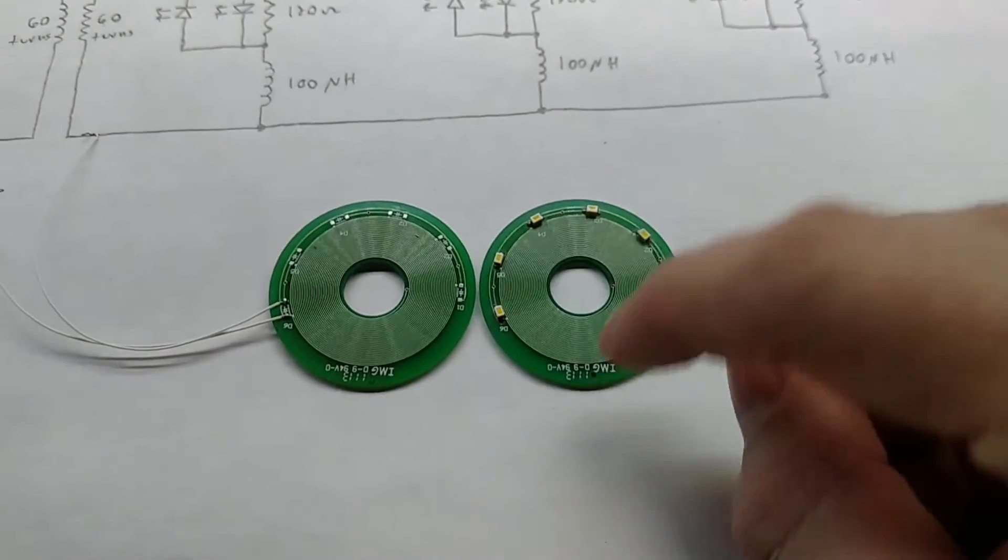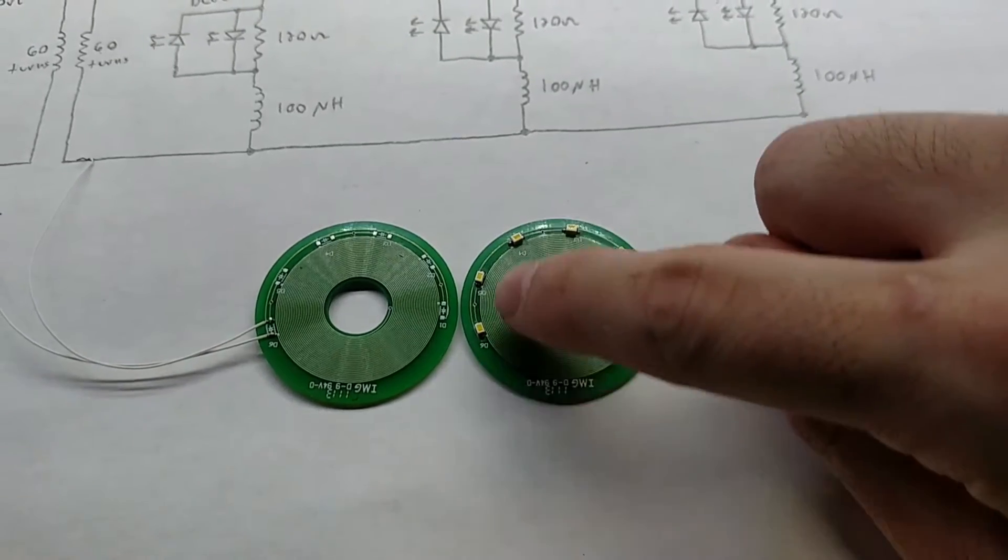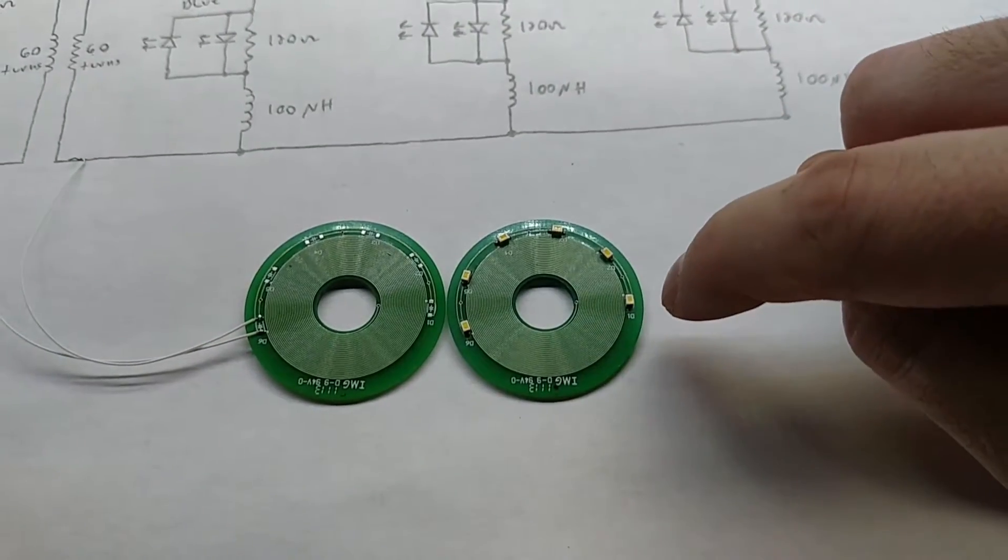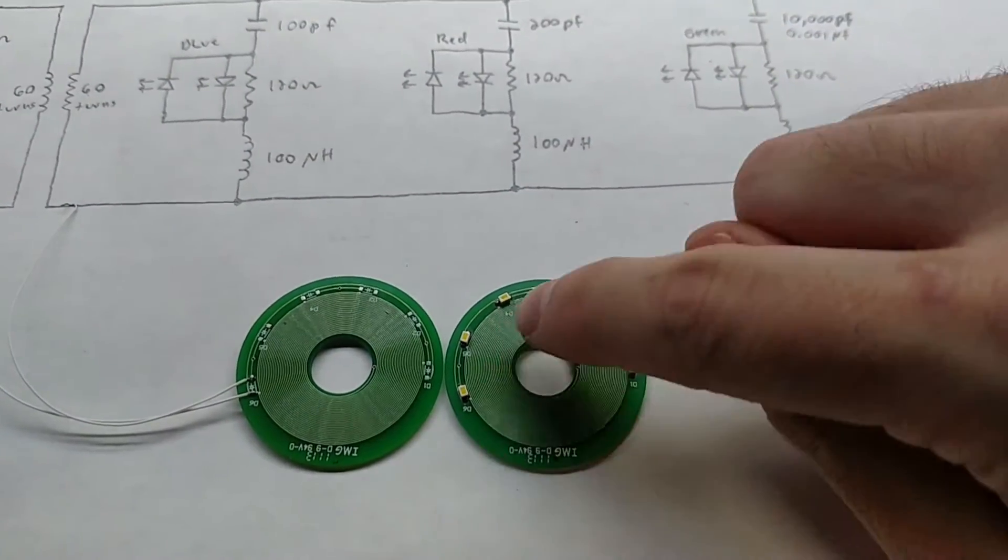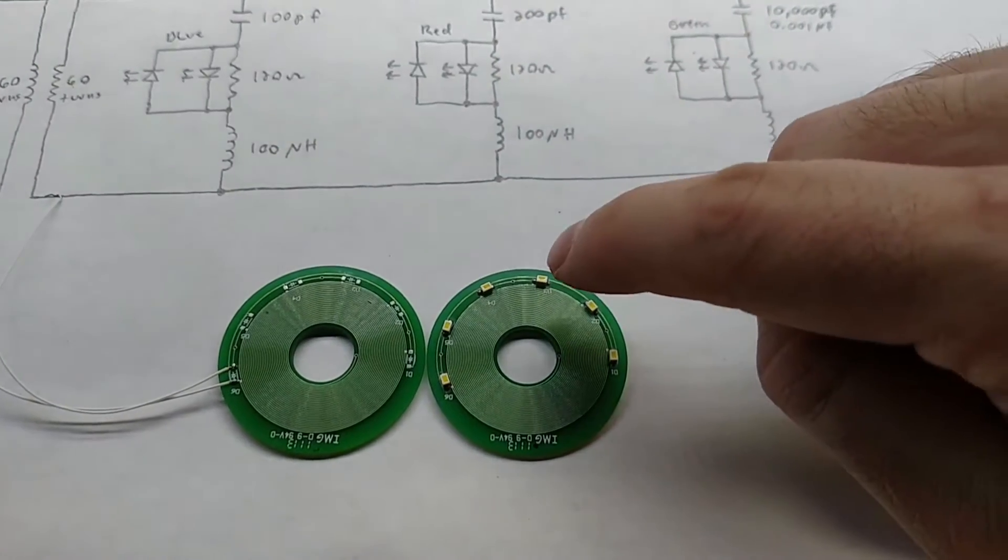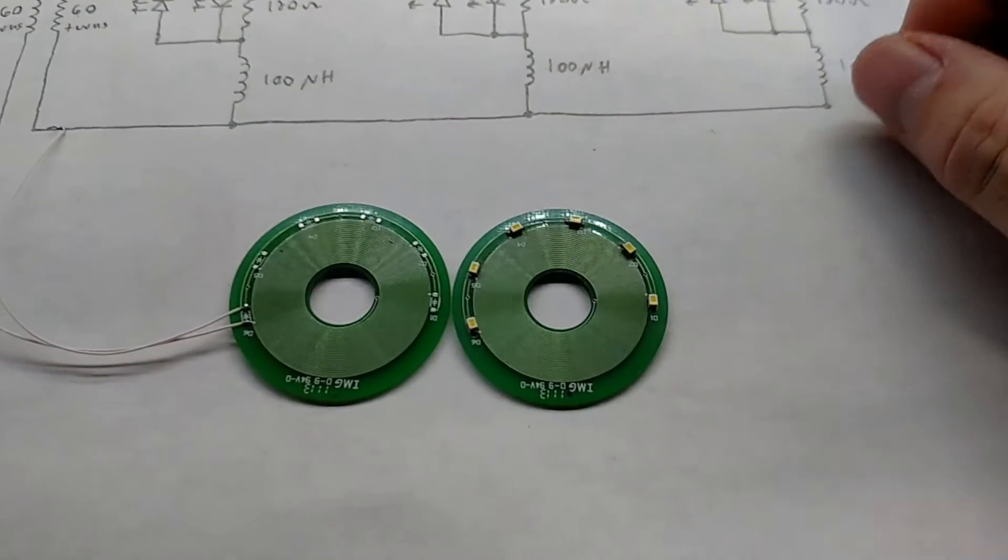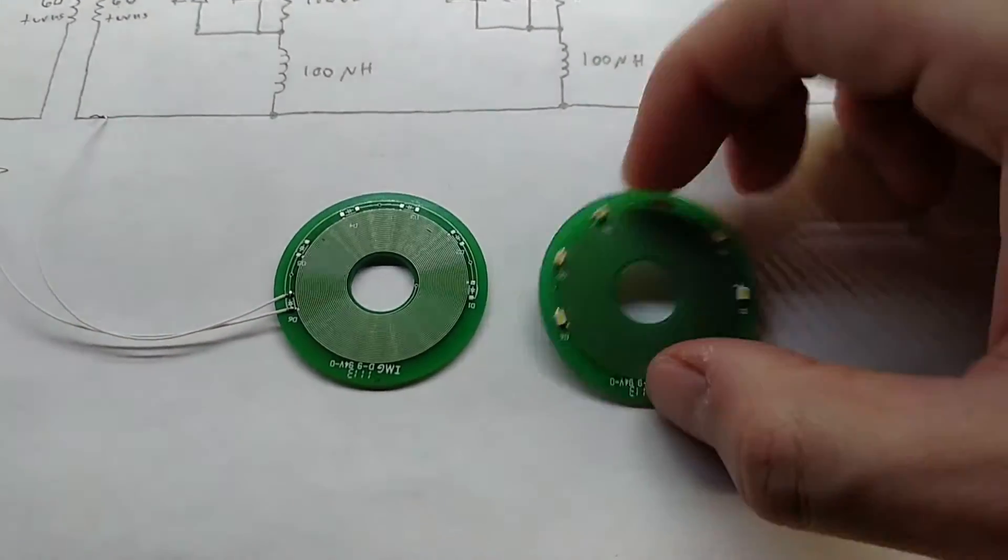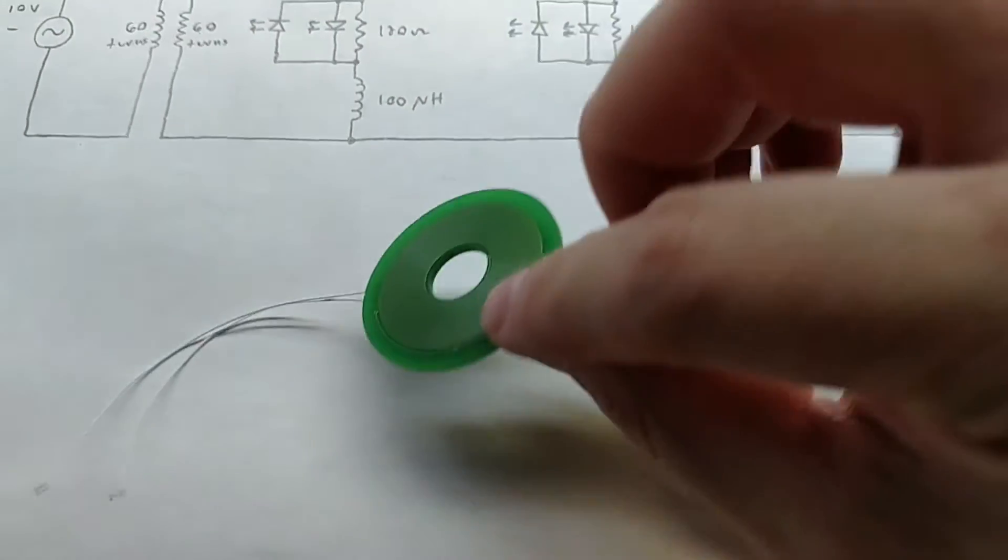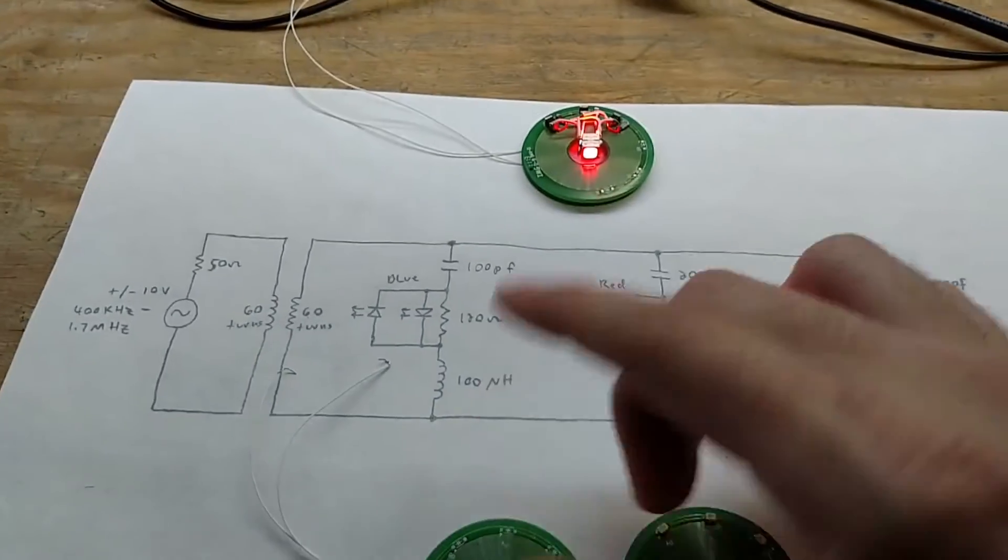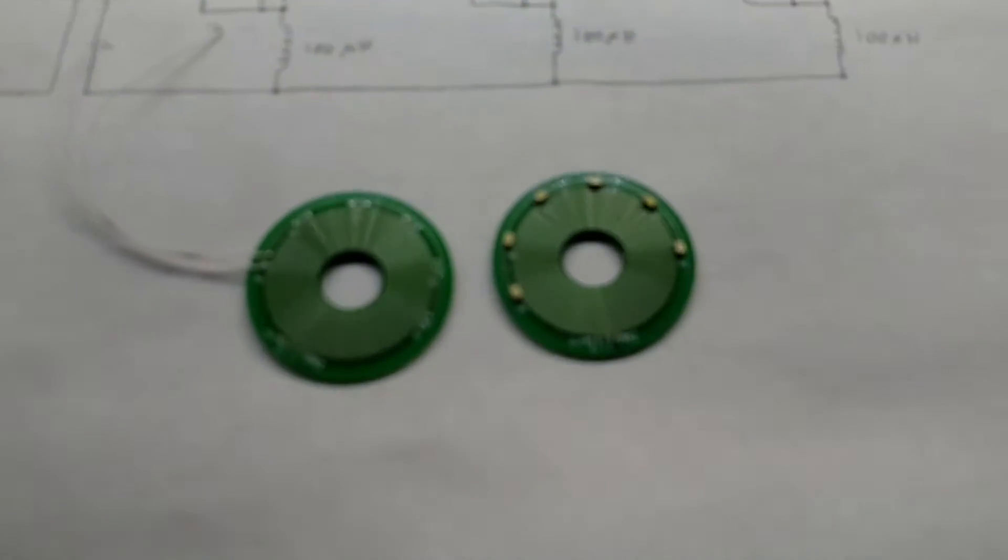All the LEDs on here, one group is in the same direction and this group is in the opposite direction. This half uses the positive side of the sine wave and this half uses the negative half of the sine wave, so we're not wasting anything. That allows maximum power transfer for both cycles.